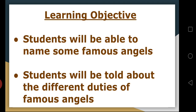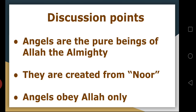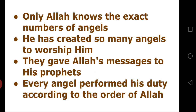Now, before starting our reading of pages 19 and 20, we will look at the discussion points. Some important points are: angels are the pure beings of Allah the Almighty and they are created from nur. Angels obey Allah only — obey means they always listen to Him. Only Allah knows the exact number of angels. Allah the Almighty has created so many angels, so only He knows the exact amount.